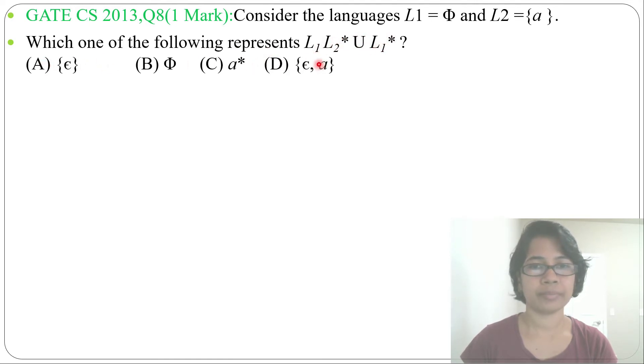Four options are given. So first we'll find this part, then we'll find this part and we'll do union of both. So what is L1, concatenation, L2 closure?